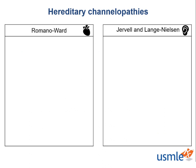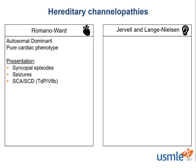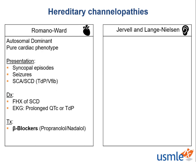The two types of congenital long QT syndrome are Romano-Ward syndrome and Jervell and Lange-Nielsen syndrome. Romano-Ward is autosomal dominant, so patients will have a very positive family history of sudden cardiac death. Romano-Ward is the pure cardiac phenotype — only the heart is involved. Patients can present with a history of multiple syncopal episodes or seizures, or in sudden cardiac arrest or sudden cardiac death. It is diagnosed by a positive family history and a prolonged QT interval on EKG. The mainstay of treatment is beta blockers, and an ICD can be implanted in patients who don't respond adequately.